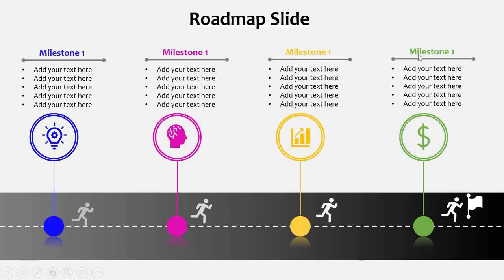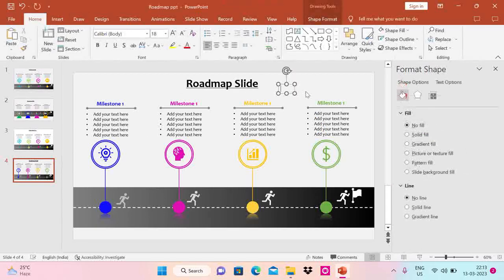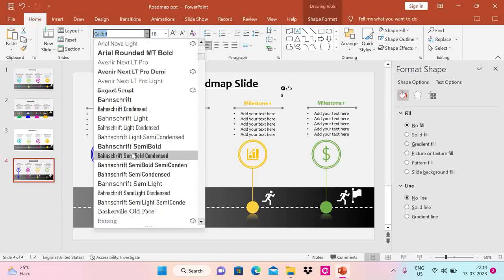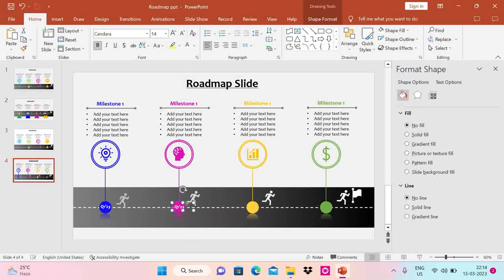As I said, we can put year, month, or quarter here. Let me put quarters — Q1, Q2, Q3, and choose the font size and center alignment, and set the font color to white. Do Ctrl+D and change it to Q2, Q3, Q4. You can do it month-wise or year-wise as well — it's up to you. Now my slide is ready.